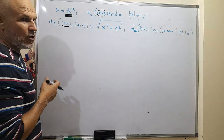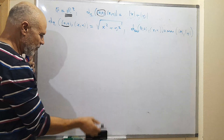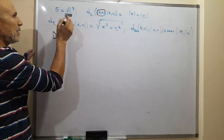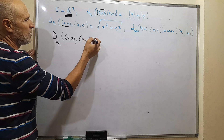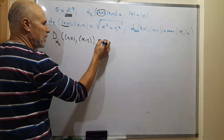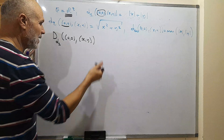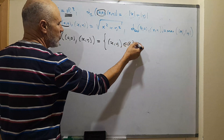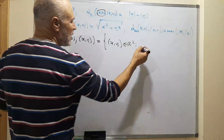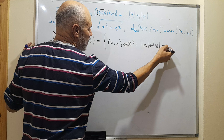The question is: what is the shape of the unit circle or unit disk? By definition, we define the disk for the first distance, centered at (0,0), as the set of points (x,y) from ℝ² such that the L1 distance is less than or equal to 1. This means the absolute value of x plus the absolute value of y is less than or equal to 1.